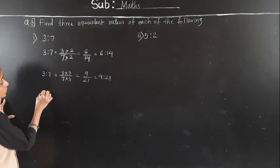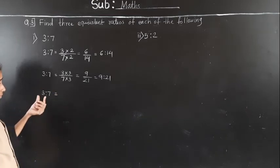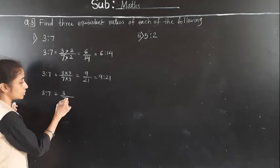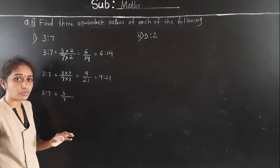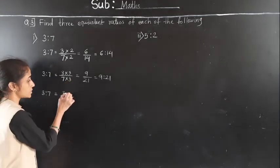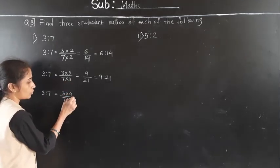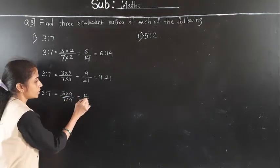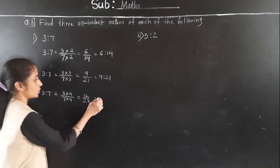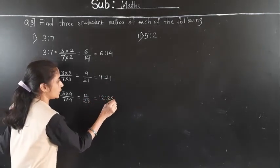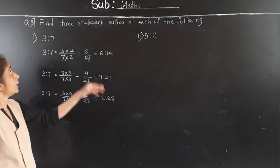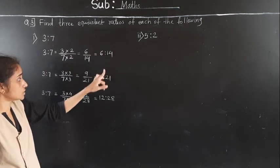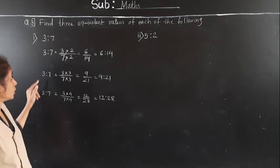For the third equivalent ratio, take 3 upon 7 and multiply numerator and denominator by 4: 3 fours are 12, 7 fours are 28. Third equivalent ratio is 12 to 28. So the three equivalent ratios of 3 to 7 are 6:14, 9:21, and 12:28.